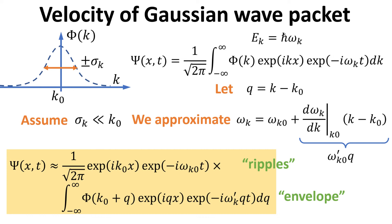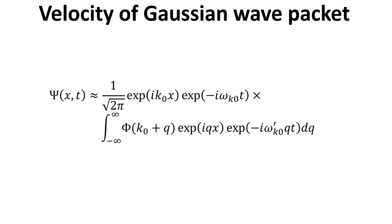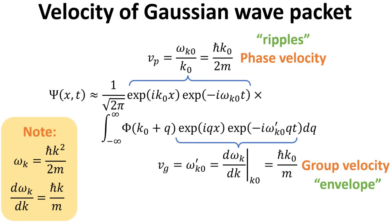The remaining integral term is called the envelope. Unlike the simple case of a traveling plane wave, the velocity of a Gaussian wave packet is less obvious. The ripple term, which has the expression of a traveling plane wave, travels at a velocity given by omega(k0) divided by k0 — we call this the phase velocity. The envelope term, on the other hand, has a velocity given by omega-prime(k0). Since we know the expression of omega(k), this gives an explicit expression of h-bar k0 divided by m. We call this the group velocity, and we see that it corresponds to the classical velocity discussed earlier, and is twice that of the phase velocity. The group velocity, which describes the overall velocity of the envelope, is a more physically meaningful description of the speed of the wave packet.